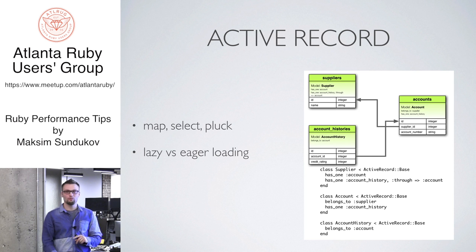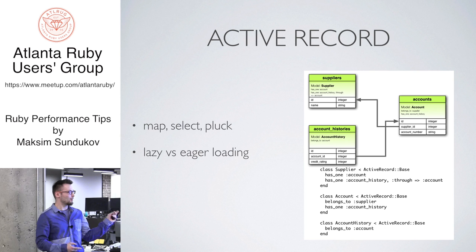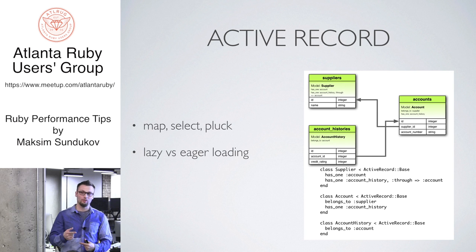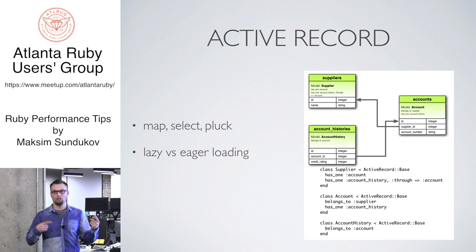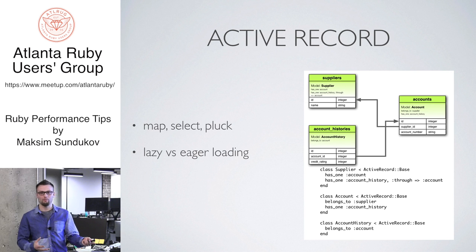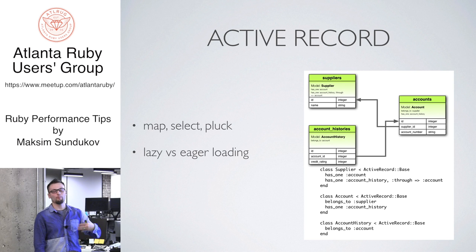Another big thing is lazy versus eager loading. When you have a relationship — say on this picture you have accounts and suppliers — you get accounts and then for those accounts you want suppliers. Depending on how Active Record loads it: if it's lazy loading, it's going to get accounts, and when you iterate over them, it's going to make individual requests to the database for each one. If you do eager loading, it's going to get all of them at once, and when you iterate, they're already available in memory. It saves a lot depending on what you do. If you have a million accounts, you don't want to make an extra million requests to the database for no reason if you can get them all at once.